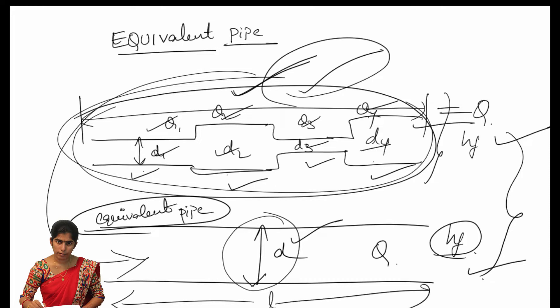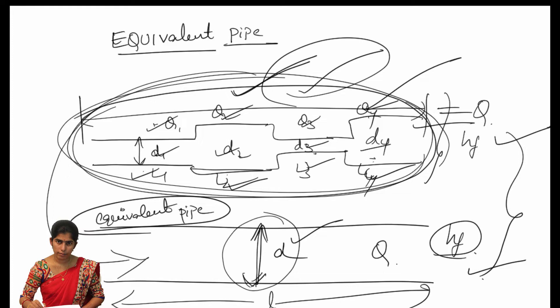This is the definition of the equivalent pipe. In today's class, we are going to derive a formula: if given different lengths of pipes with diameters D1, D2, D3, D4 and lengths L1, L2, L3, L4, and we want to change this compound pipe into an equivalent pipe, how we can find out the exact diameter and length. There is a derivation — one formula — that we will see in this class.